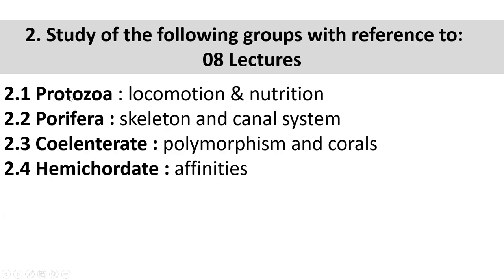Protozoa is now, according to the science community, shifted to the kingdom Protista. Examples include Paramecia and Amoeba - these are unicellular, eukaryotic organisms. It is not classified as an animal-like organism in the traditional sense; it is a protozoan. Examples include Amoeba, Paramecia, Euglena - all are eukaryotic but unicellular organisms. The classification of Protozoa you have already learned.